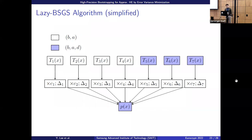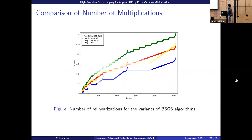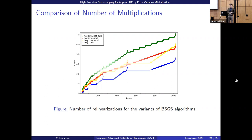After this process we have four linearized ciphertexts and three non-linearized ciphertexts. We multiply by the polynomial coefficients — which are plaintexts, so no linearization needed — and add them together to get the non-linearized p(x), linearizing only if needed at the end. This reduces two or three linearizations compared to the original BSGS. The lazy BSGS (yellow) has about half the linearizations of the original (green). The blue line shows the savings for odd polynomials, since our approximation polynomial is odd.